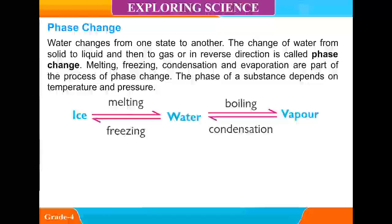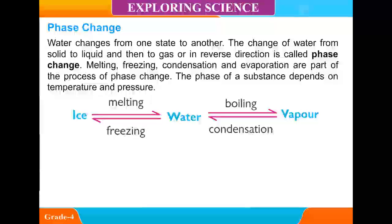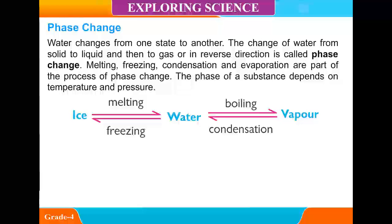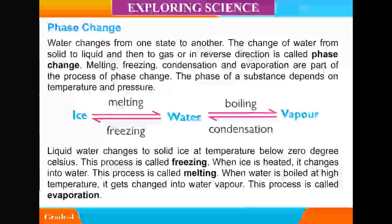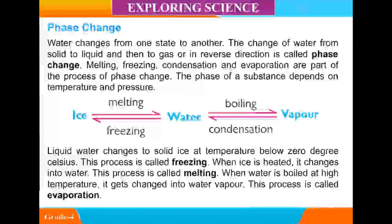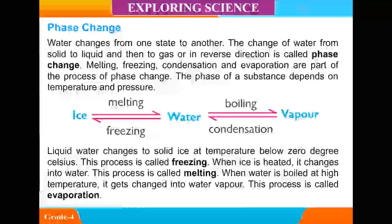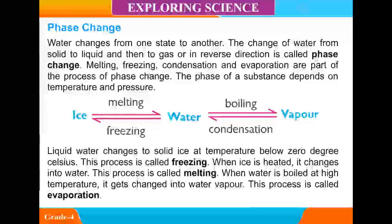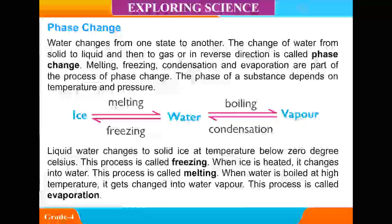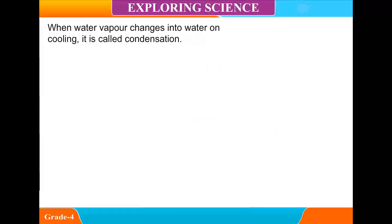Ice, melting, freezing, water, boiling, condensation, vapour. Liquid water changes to solid ice at temperatures below zero degrees Celsius — this process is called freezing. When ice is heated, it changes into water — this process is called melting. When water is boiled at high temperature, it gets changed into water vapor — this process is called evaporation. When water vapor changes into water on cooling, it is called condensation.